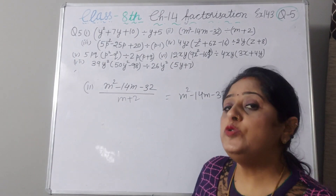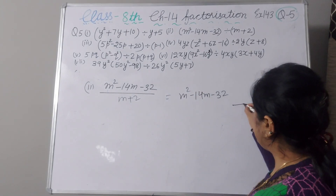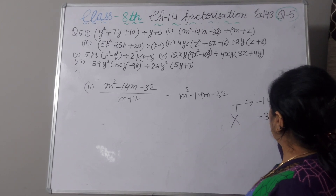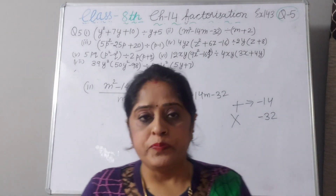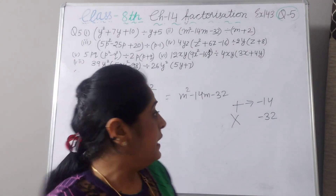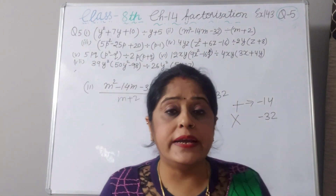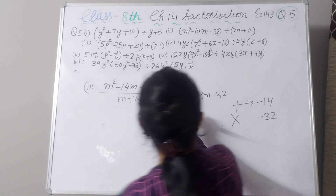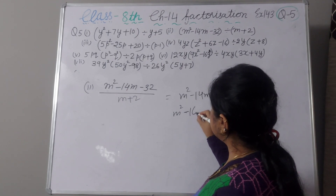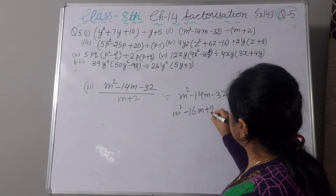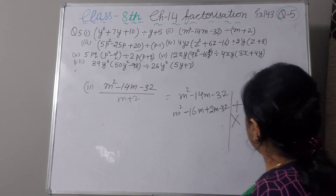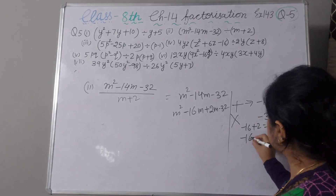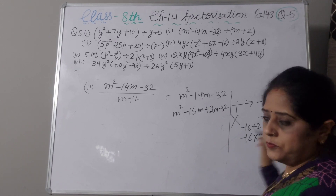You have to think of two numbers: by adding we get minus 14, and by multiplying we get minus 32. 16 times 2 is 32. So take minus 16 and plus 2. Minus 16 plus 2 gives minus 14, and minus 16 multiplied by 2 gives minus 32. So we write: m squared minus 16m plus 2m minus 32.